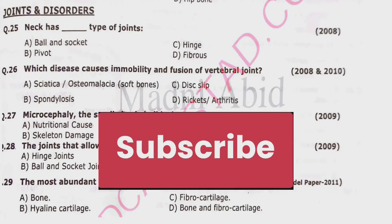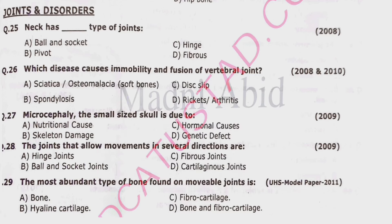Question 25: The neck has what type of joints? Options: ball and socket joints, pivot joints, hinge joints, or fibrous joints. The correct option is beta — pivot joints.